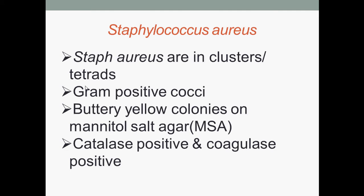First, Staphylococcus aureus. Staphylococcus aureus are in clusters or tetrads and they are Gram-positive cocci. They form buttery yellow colonies on mannitol salt agar.